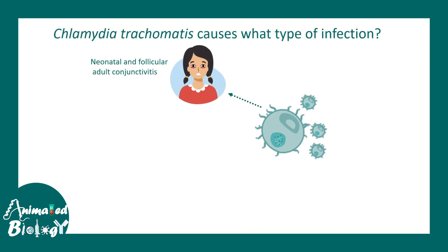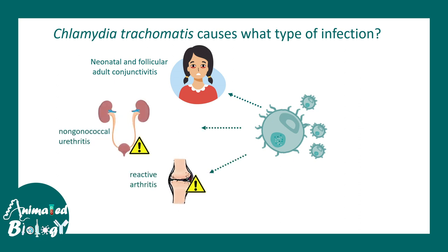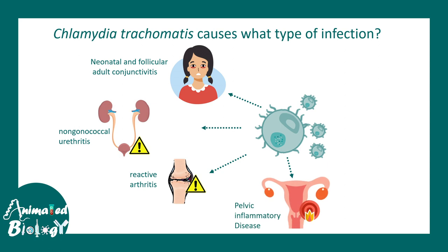Chlamydia trachomatis can cause a variety of infections, including neonatal and follicular adult conjunctivitis, non-gonococcal urethritis, reactive arthritis, and pelvic inflammatory disease, just to name a few.